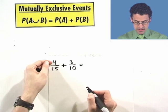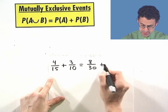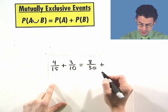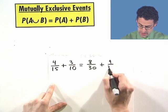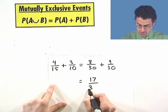So I multiply the top and bottom here by 2, and so I see 8 over 30. Multiply the top and bottom here by 3, and so I see 9 over 30, and so the probability equals 17 over 30.